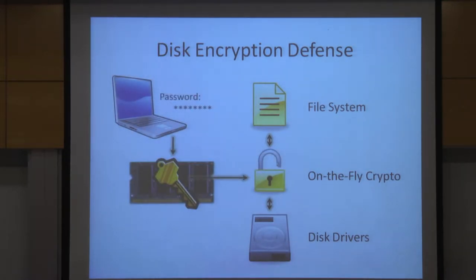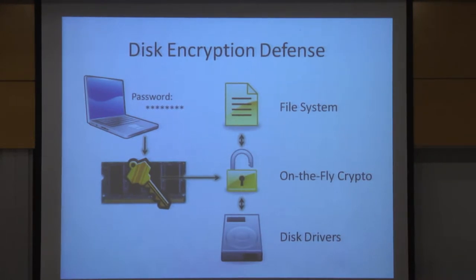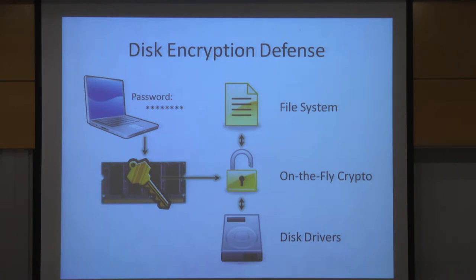This has to be keyed by something. Disk encryption typically uses a key that is either generated from the user's password or encrypted somewhere else based on the user's password. The user puts in a password when they turn on their computer, which allows the operating system to read the file system and proceed to boot. Because the operating system is running from this disk, in a classic full disk encryption scheme, the operating system has to maintain in memory somewhere this key so it can continue to access files — for as long as the OS is running.